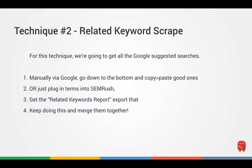Technique number two is called the related keyword scrape. We're going to go into Google and collect all the suggested searches — not only the auto-suggest that appears as you type, but also the related search boxes at the bottom of the results page. Google will tell us what other people are searching for. You can do this manually or plug your terms into SEMrush's related keywords report and export that, then merge it with your existing list.